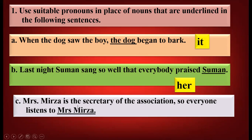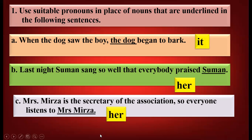Mrs. Mirza is the secretary of the association, so everyone listens to Mrs. Mirza. Now here, we will again write 'her'. Because 'listen' is a verb and Mrs. Mirza has come after the verb. So we have to write down H-E-R 'her' over here.